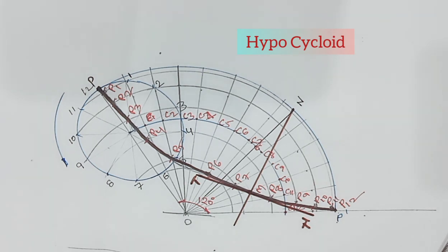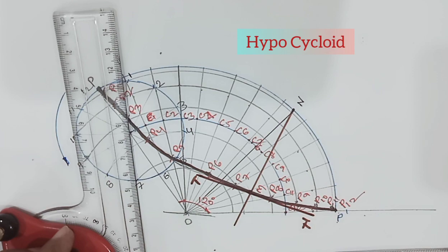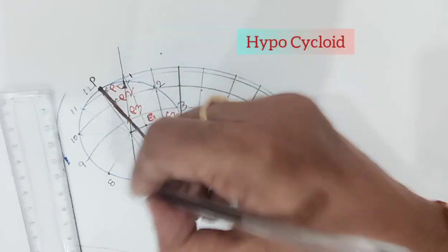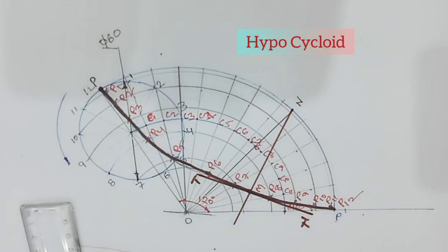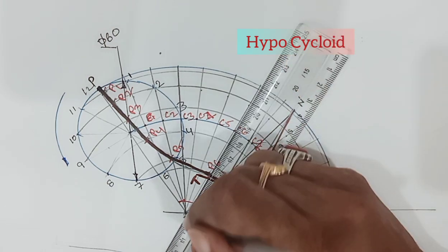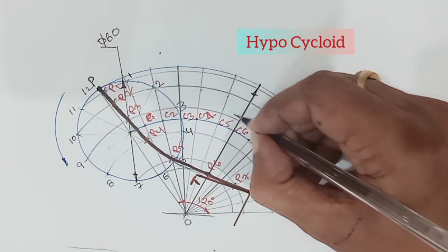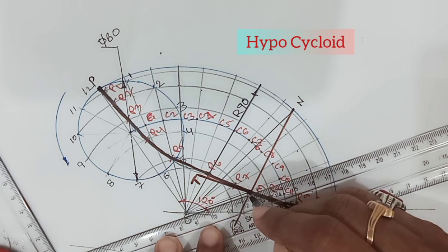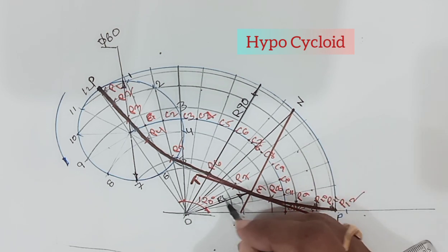Then we do the dimensioning. The diameter of the rolling circle, the radius of the generating (directing) circle which is 90 mm, and the tangent point at a distance of 40 mm.